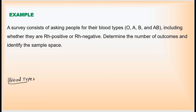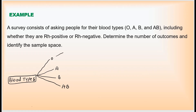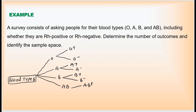There are four types of blood: O, A, B, and AB. Based on the RH factor, O can be O positive or O negative; A can be A positive or A negative; B can be B positive or B negative; and AB can be AB positive or AB negative. This is the tree diagram showing the number of outcomes.